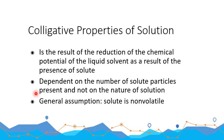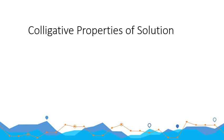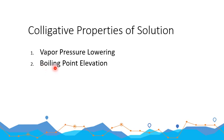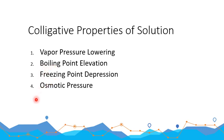Colligative properties of solution are dependent on the number of solute particles and not on the nature of the solution. We will have a general assumption that we are dealing with a solute that is non-volatile. We have four colligative properties of solution: number one is vapor pressure lowering, boiling point elevation, freezing point depression, and osmotic pressure. We will learn why solute-solvent interaction results in these four properties.